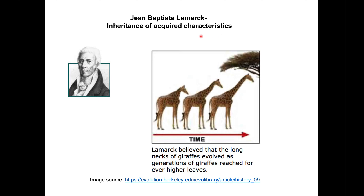The way Lamarck described it suggests that evolution or adaptation to an environment is an active response to changes in the environment — an organism wants to adapt, therefore it changes during its lifetime and then passes that on. And that is the wrong mechanism.